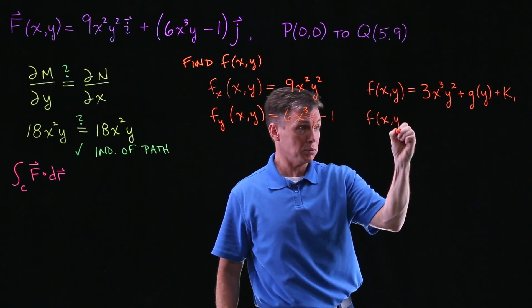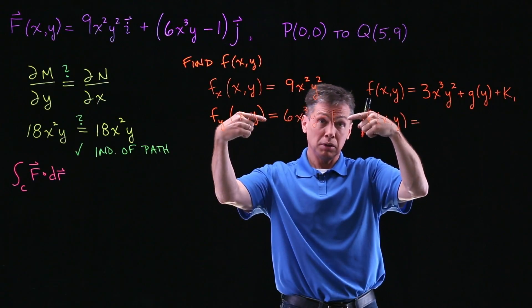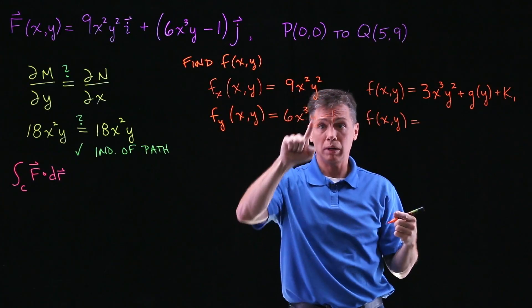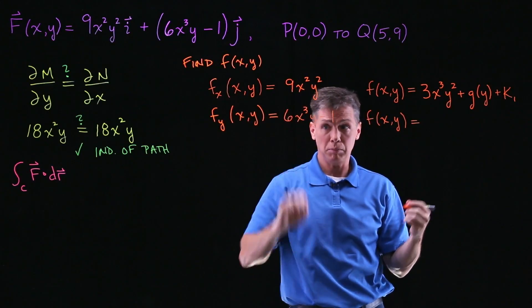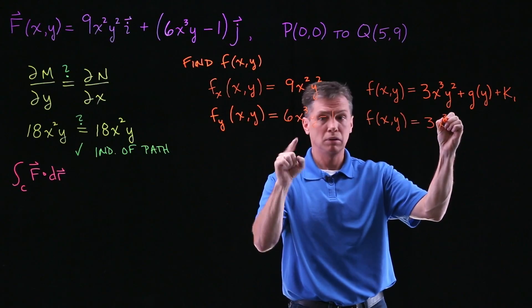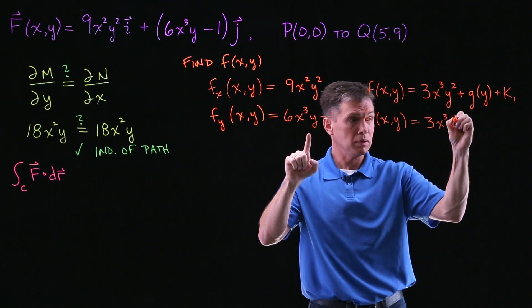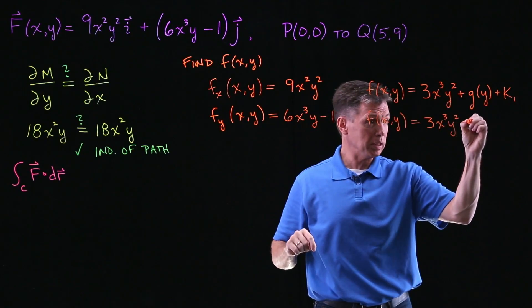We also use this other partial derivative that we found to write f of XY by integrating this expression with respect to Y. So Y bumps up to the 2 power, divide by 2, so I get my 3X³ times Y² minus 1 becomes minus Y when we anti-differentiate.